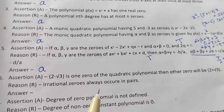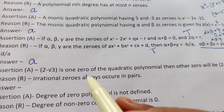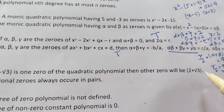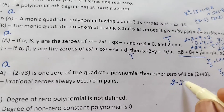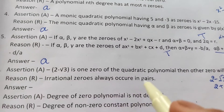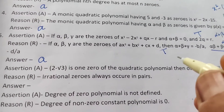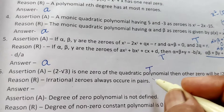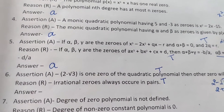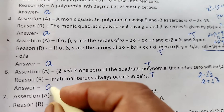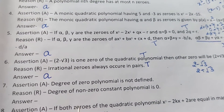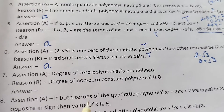Question 6: Assertion — if 2 - √3 is one zero of a quadratic polynomial, then the other zero will be 2 + √3. Reason — irrational zeros always occur in pairs. Both are true — irrational zeros always come in conjugate pairs. Both statement and reason are valid, so the answer is option A.